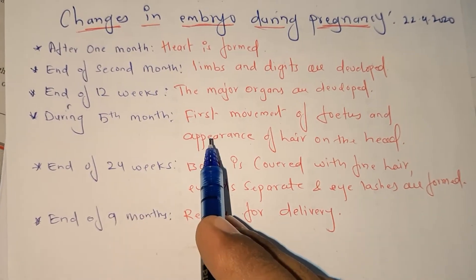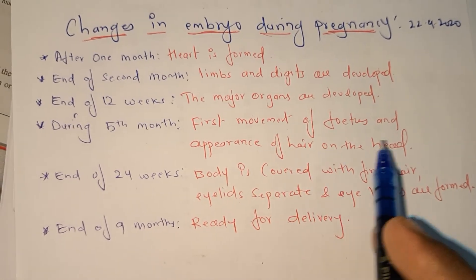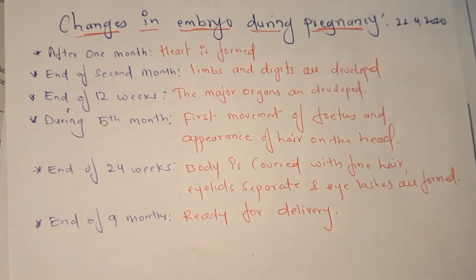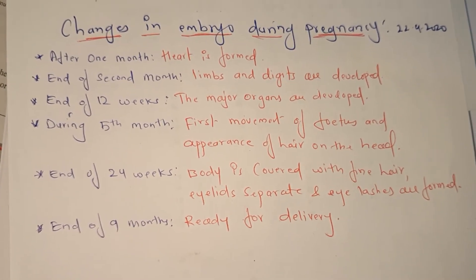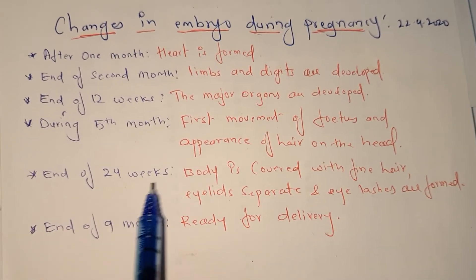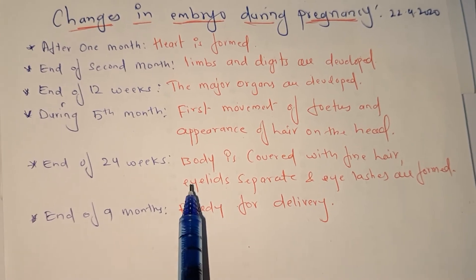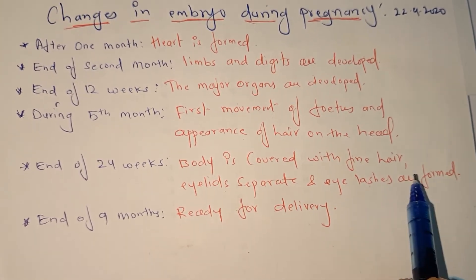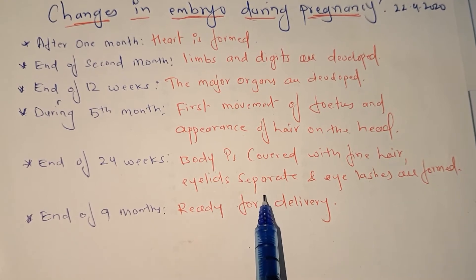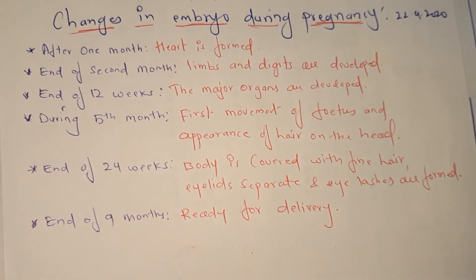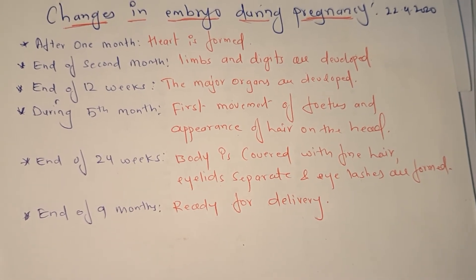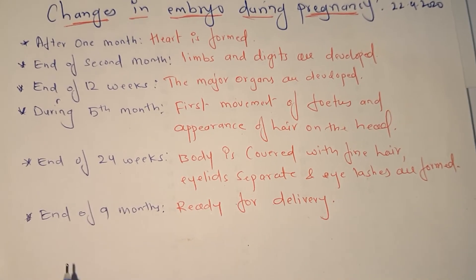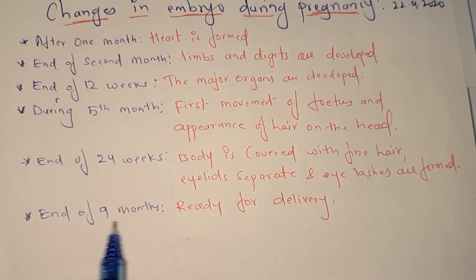During the fifth month, the first movement of the fetus occurs and hair appears on the head. By the end of twenty-four weeks (end of the sixth month), the body is covered with fine hairs, and the eyelids and eyelashes are formed and become separate.